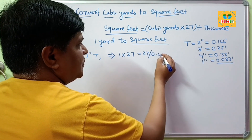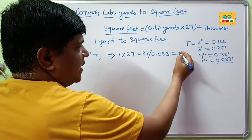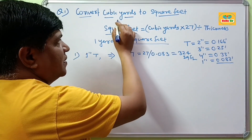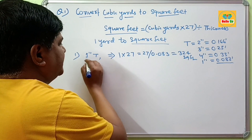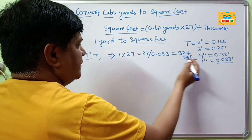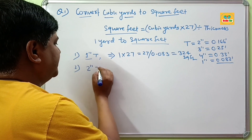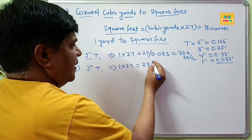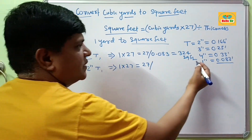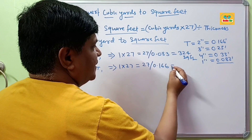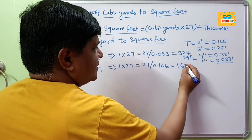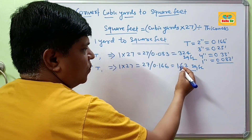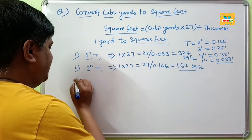At 1 inch thickness, 0.0833 feet: when you divide 27 by 0.0833, you get 324 square feet. So 1 cubic yard at 1 inch thickness equals 324 square feet. For 2 inch thickness: 1 × 27 = 27, divided by 0.166, which counts about 162 square feet. So 1 cubic yard equals 162 square feet at 2 inch thickness.